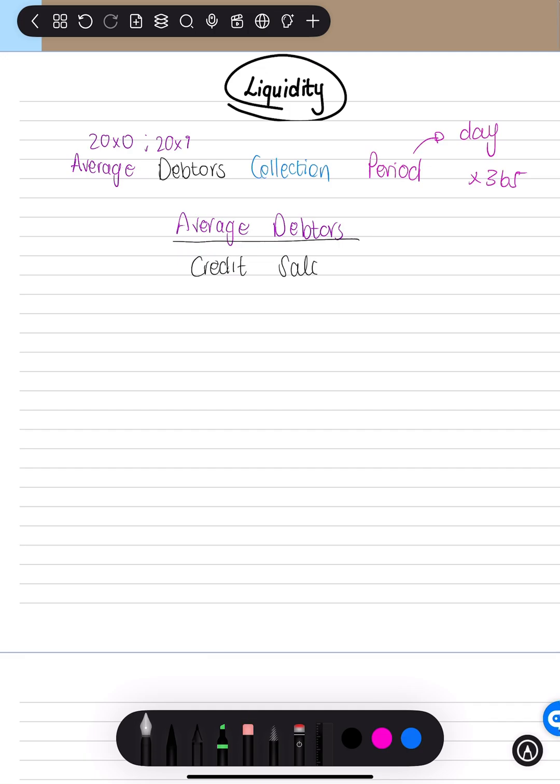Credit sales. And again, because it's period, we say times 365.